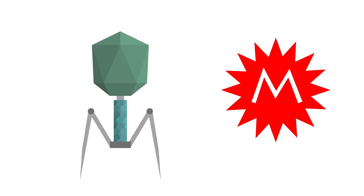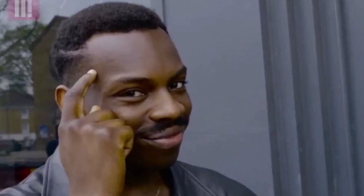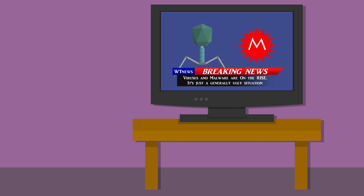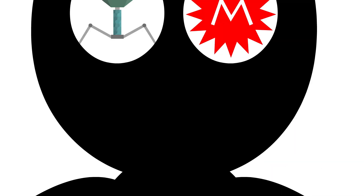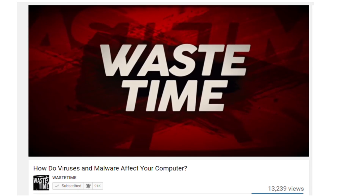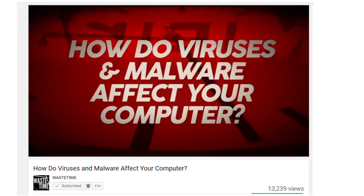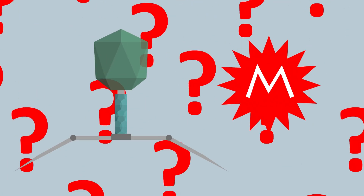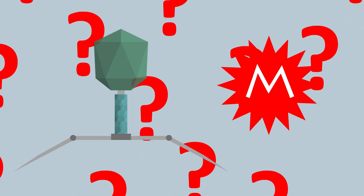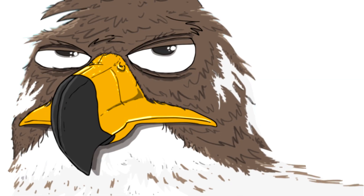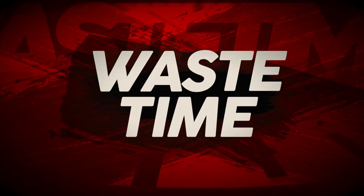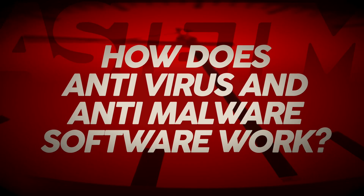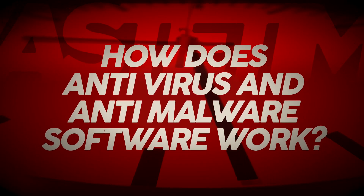Viruses and malware — it's something you're very familiar with. You hear about it in the news, you see it all the time, and we've even talked about it here on Waste Time. Our previous video on the subject was about exactly how you might get infected with one of these things. But an interesting question is: how do you stop them? What's the difference between a virus and malware? Does stopping them involve different things? Hi folks, it's Falcon, and today on Waste Time we ask the question: how does antivirus and anti-malware software work?